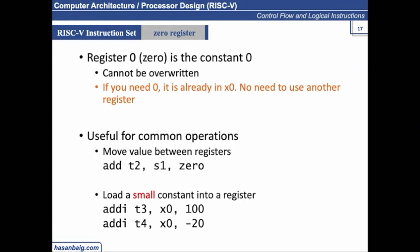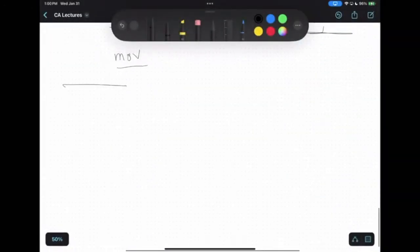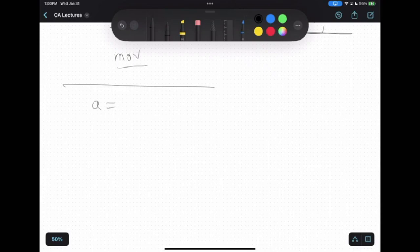It's very similar to when you write code in Python, like a equals 10. How do you write this in assembly? This is what I have been telling you: addi a, x0, 10. What is the content of x0? It's always zero. You are adding it with 10 and then assigning the result to a. So you are actually initializing a.